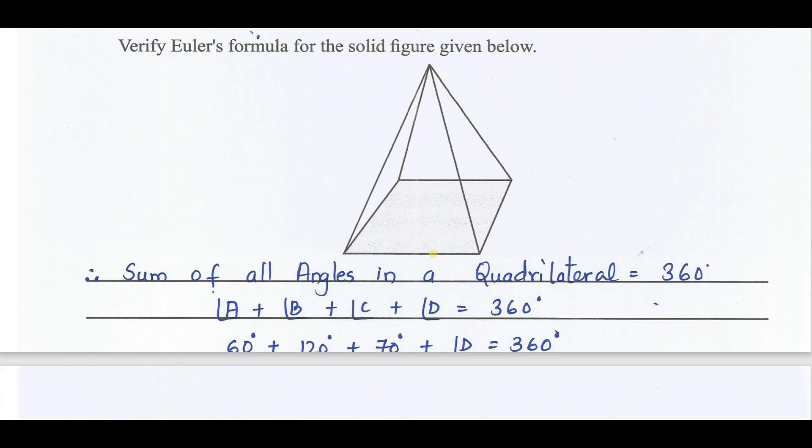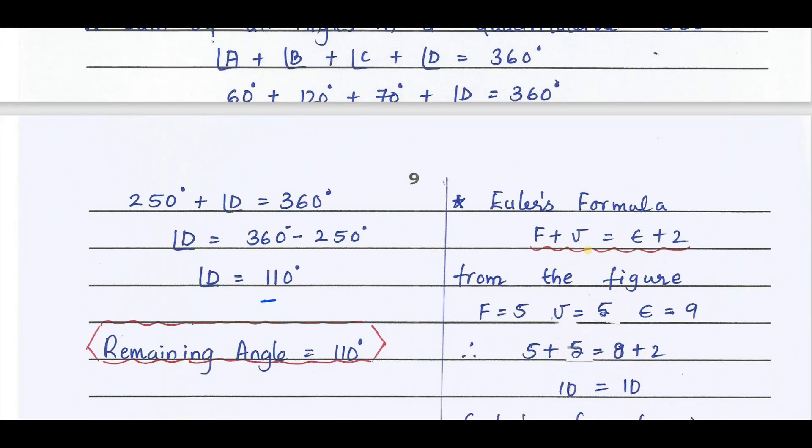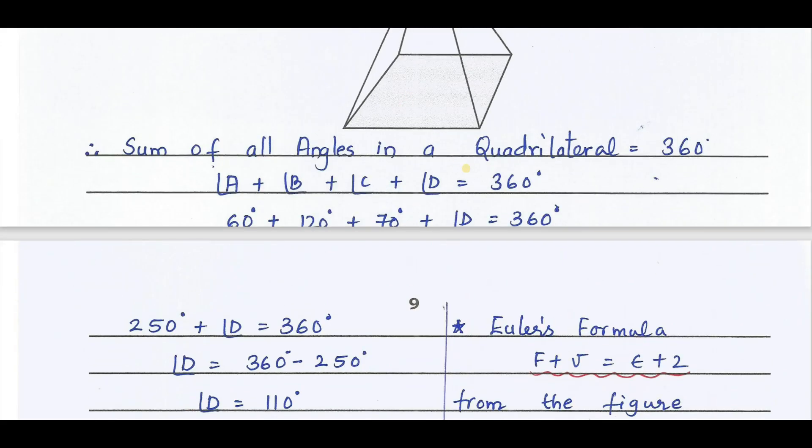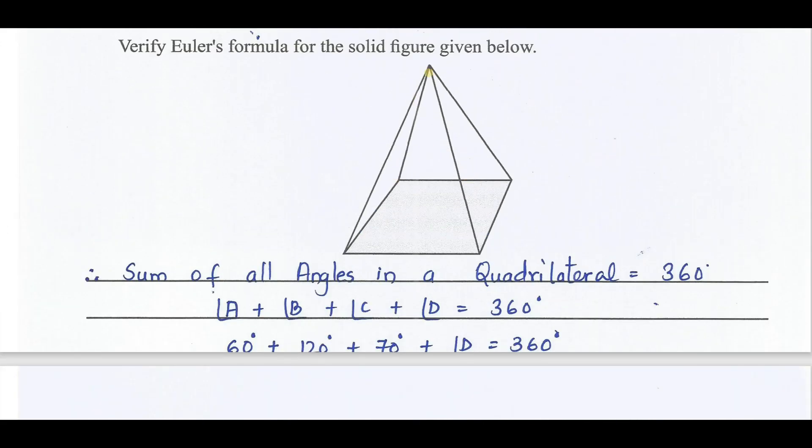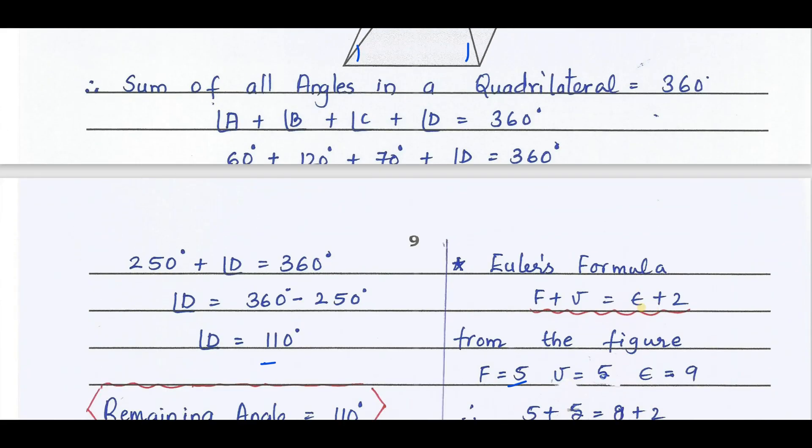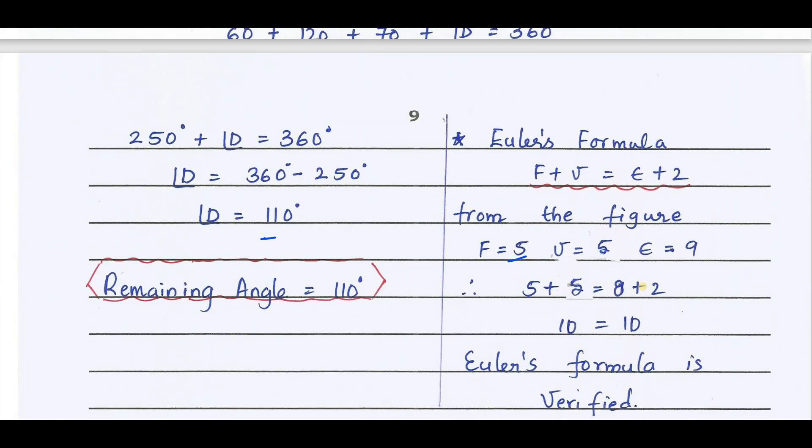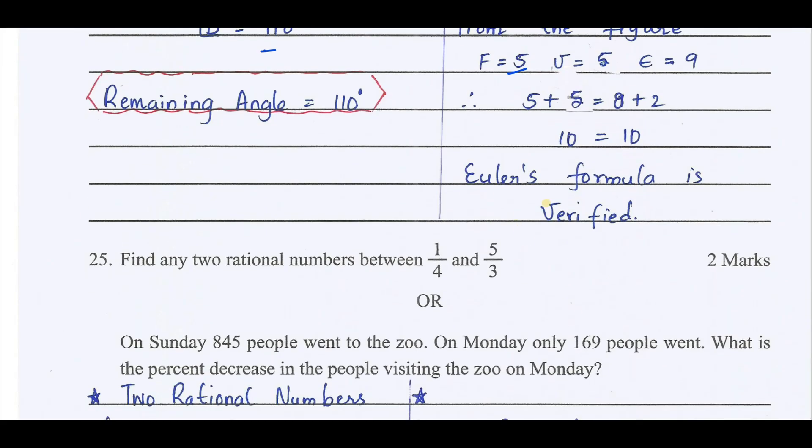Verifying Euler's formula for this prism: F plus V equals E plus 2. Number of faces is 5. Number of vertices is also 5. Number of edges is 8. So, 5 plus 5 equals 10. 8 plus 2 is 10. Hence, Euler's formula is verified.